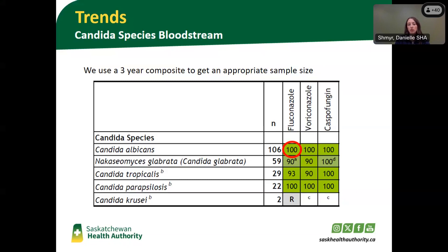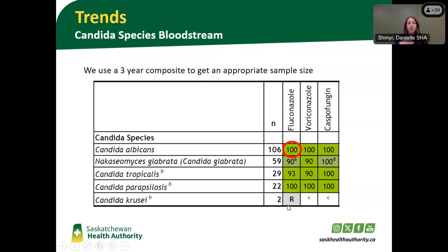So if I see a patient who has a candidemia and the organism is Candida albicans without susceptibility data, I feel very confident in stepping that patient down to fluconazole right away, provided the underlying disease state deems that appropriate. For Candida glabrata, at the susceptible dose-dependent breakpoint for fluconazole, we have about 90% susceptibility — which is also great, however that does vary from year to year. A couple years ago we actually sat around 75%, so if I have a patient with glabrata bacteremia, I would wait before stepping them down from caspofungin to fluconazole. We also report Candida krusei because we know it's intrinsically resistant to fluconazole, so that's included as a reference.